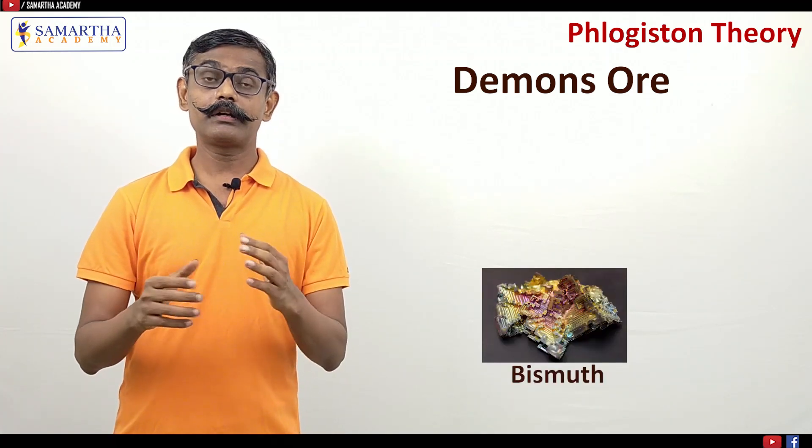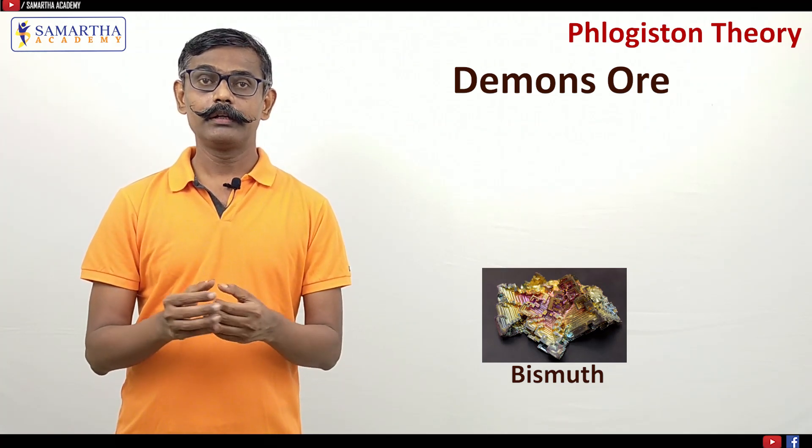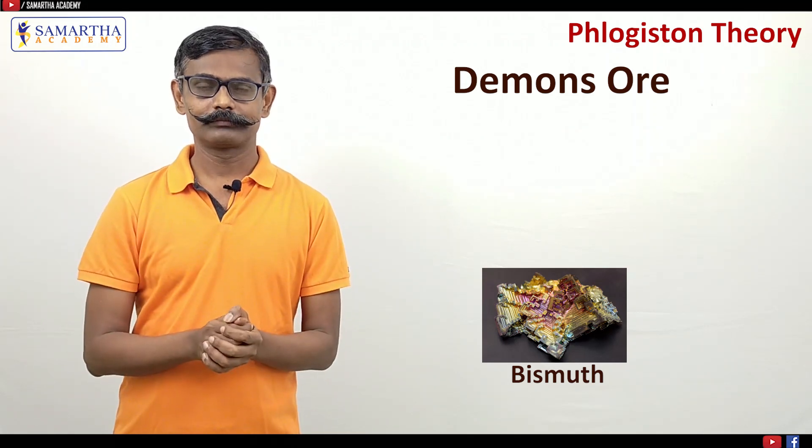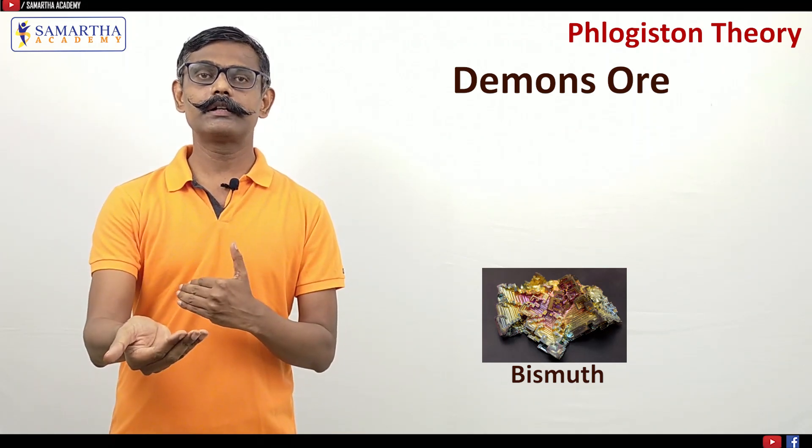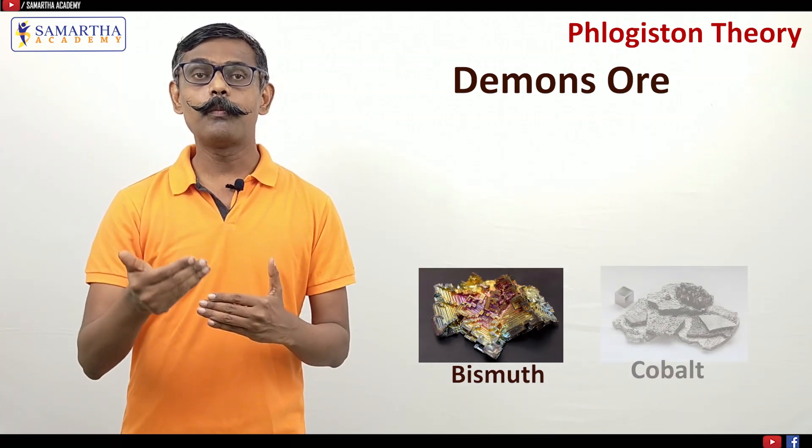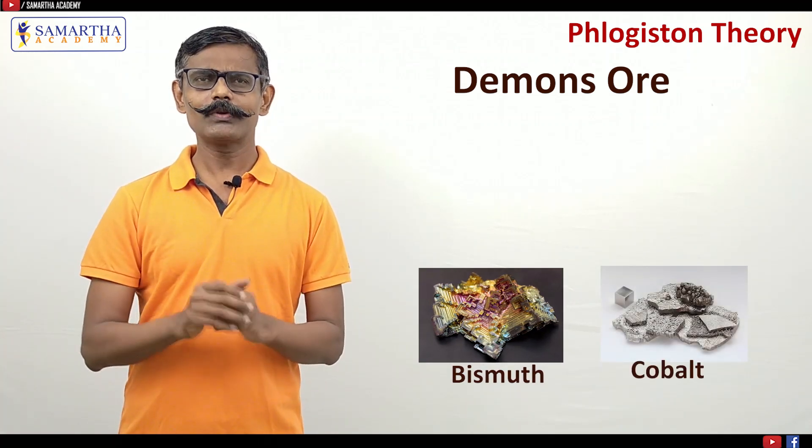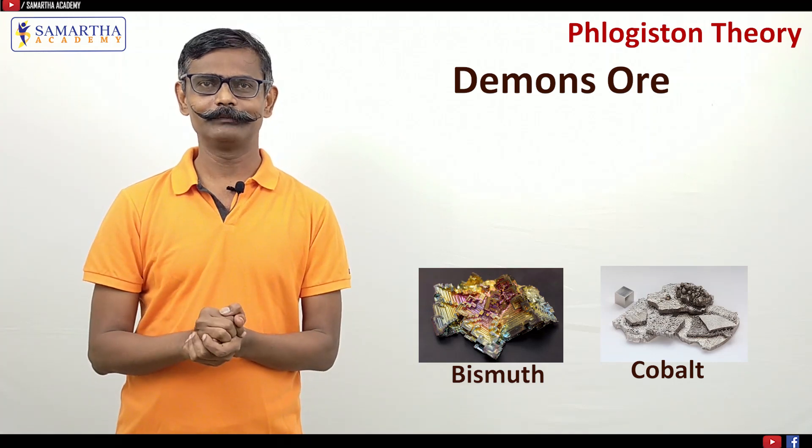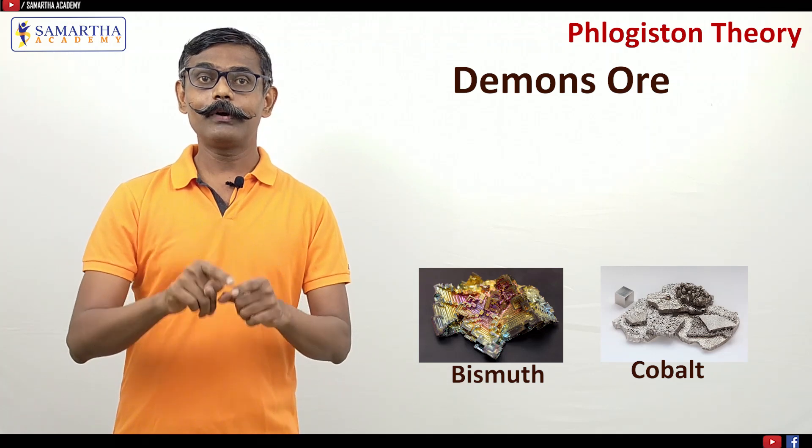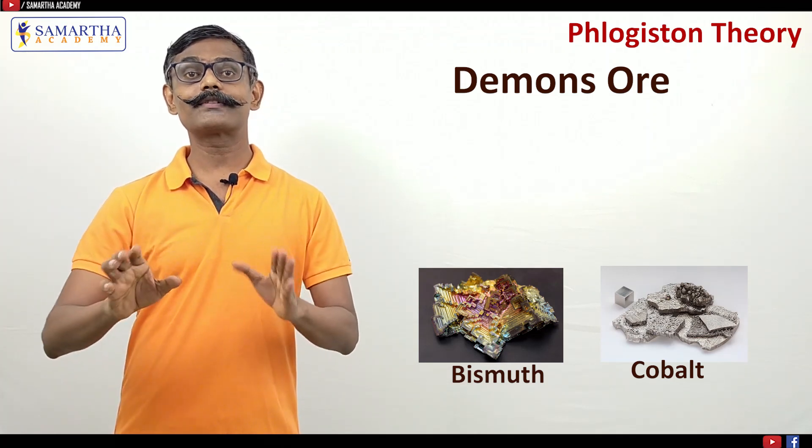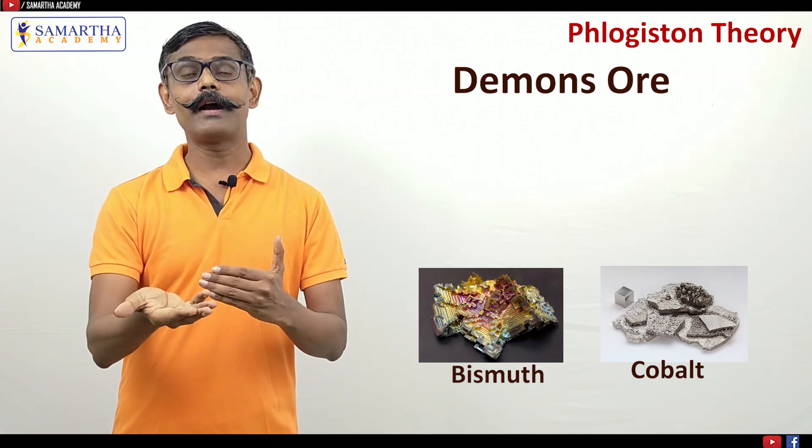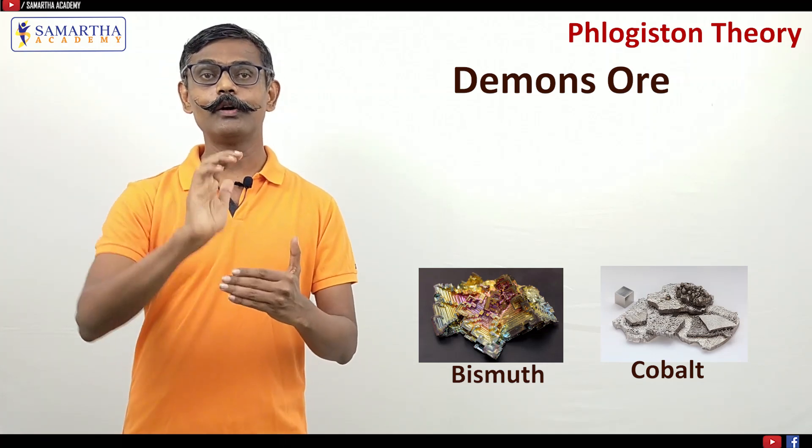But during the treatment of the ore, he noted the evolution of toxic gases. And at last, he obtained a different element called copper. So a new thing he has discovered. The same copper was used for coloring of the glasses. Blue color of the glasses was imparted due to that ore of copper.